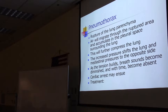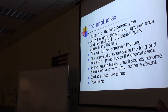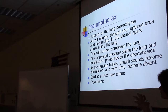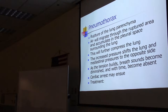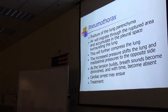The first type is pneumothorax. When there's rupture of the lung parenchyma, air will migrate through the ruptured area and accumulate in the pleural space surrounding the lung, further compressing it. Air keeps leaking breath after breath, pressing externally on the lung. The increased pressure shifts the lung and mediastinal structures to the opposite side, breath sounds become diminished and eventually absent, and the positive pressure on the heart can prevent blood from returning and being ejected — leading to cardiac arrest.